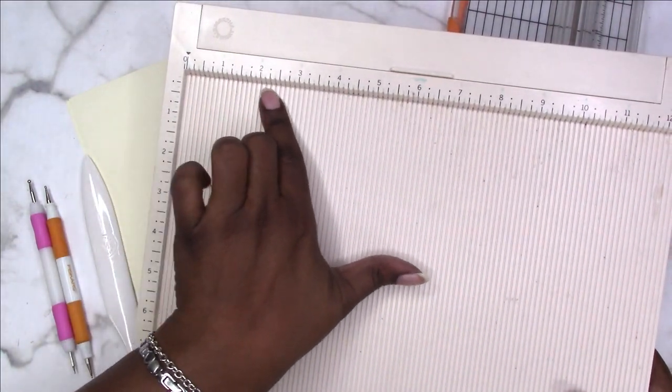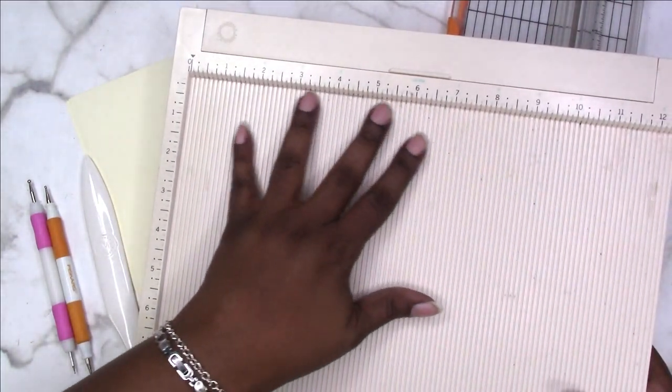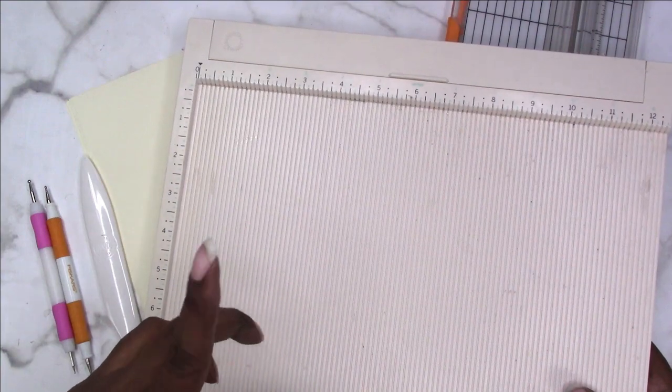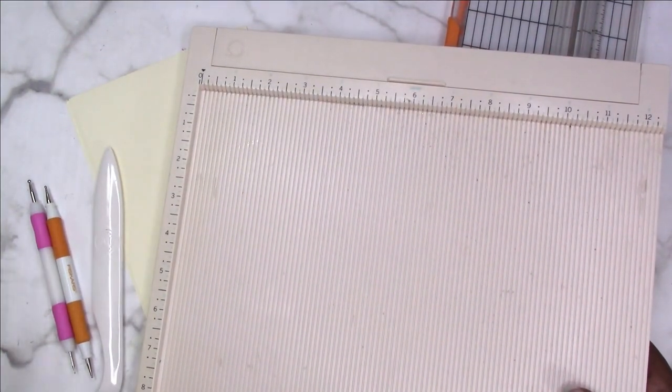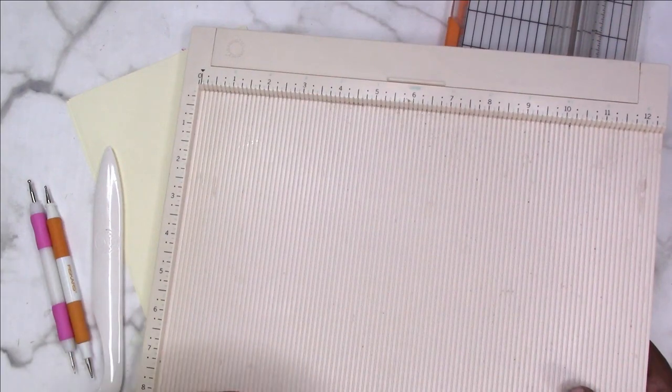It has one-eighth inch increments. Scoring basically makes a piece of paper or cardstock easier to fold and gives you a cleaner fold.